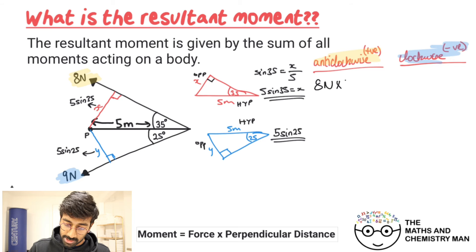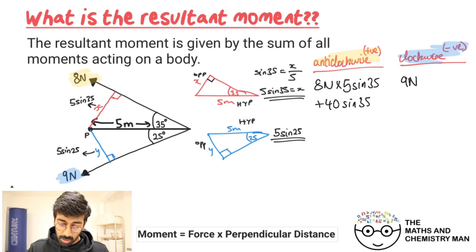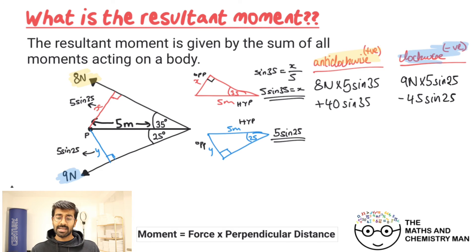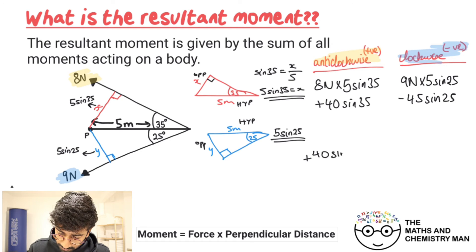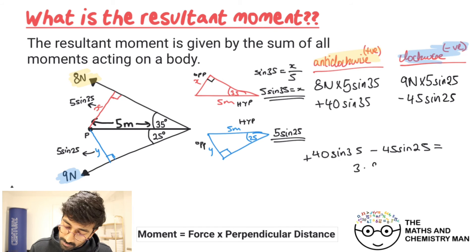For the anti-clockwise direction: eight Newtons multiplied by 5 sine 35, which simplifies to 40 sine 35 — positive. For the clockwise direction: nine Newtons times 5 sine 25, which simplifies to 45 sine 25 — negative. To find the resultant: positive 40 sine 35 take away 45 sine 25. Typing that into a calculator gives 3.93 Newton meters to three significant figures.